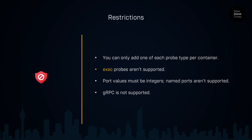There are some restrictions you should know about when working with Container Apps health probes. You can only add one of each probe type per container — for example, you can't have two readiness probes for one container. In Kubernetes, we have exec probes, where you can invoke an application inside the container and based on the exit code, Kubernetes determines the health status. We don't have exec probes in Azure Container Apps. Additionally, port values must be integers, named ports aren't supported, and gRPC is also not supported.